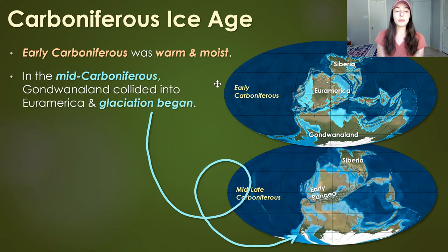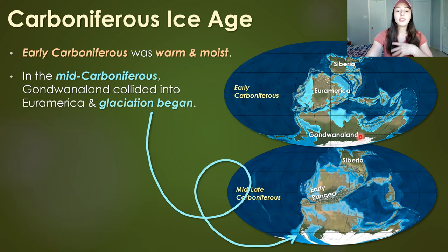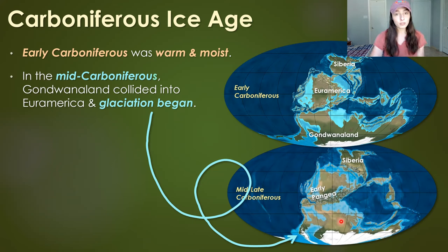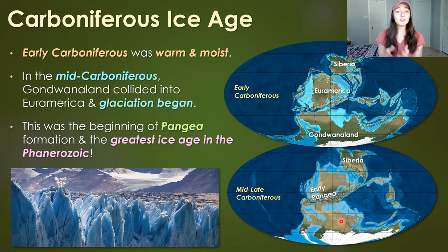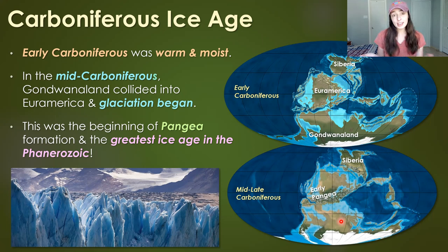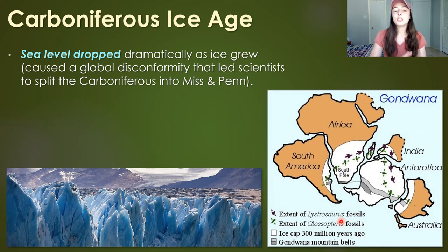During the mid-Carboniferous, around the boundary between the Mississippian and Pennsylvanian, Gondwanaland — the southern supercontinent — collided with the northern supercontinent Uramerica, and Pangea began to form. But this was not only the beginning of Pangea, the famous Permian supercontinent, but also the greatest ice age since Snowball Earth — the greatest ice age in the Phanerozoic, which includes the Paleozoic, Mesozoic, and Cenozoic eras.